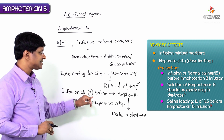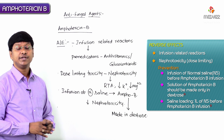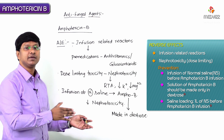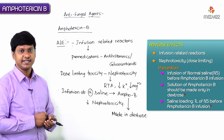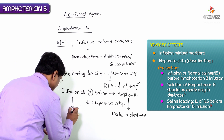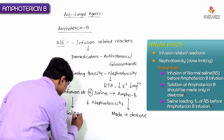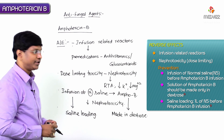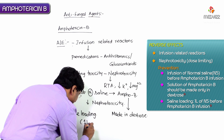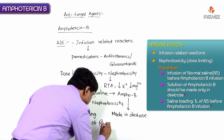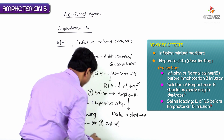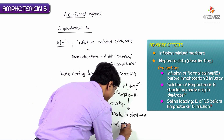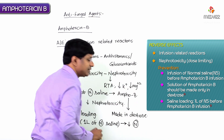This approach is called saline loading. Approximately 1 liter of normal saline infusion should be given before administering amphotericin B, and this may decrease nephrotoxicity.